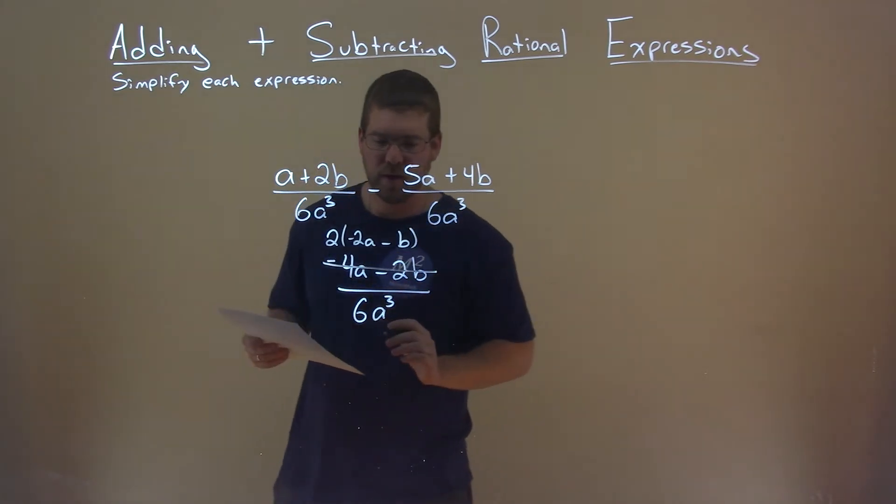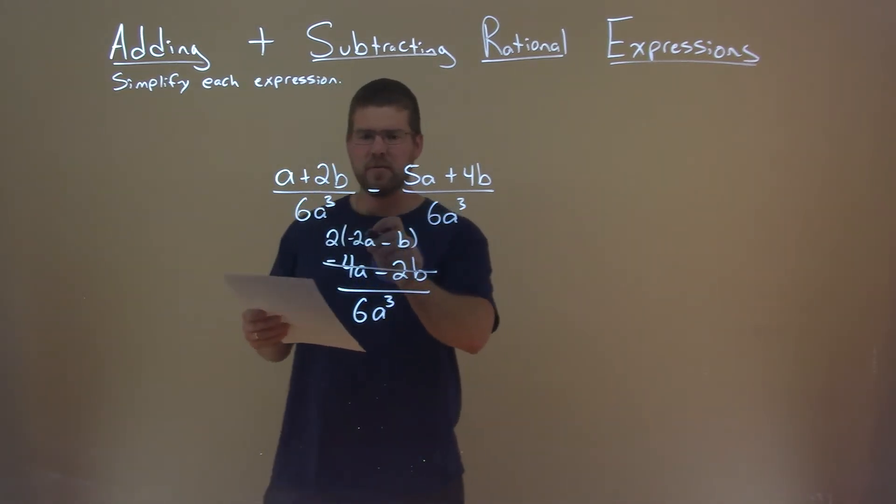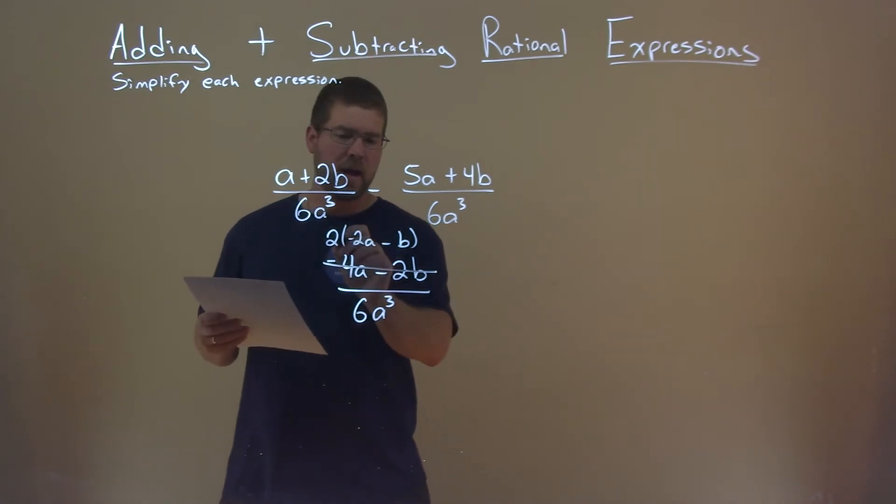So if we replace that right here, we see we have 2 times negative 2a minus b. And now this 2 can go into the 6 three times.